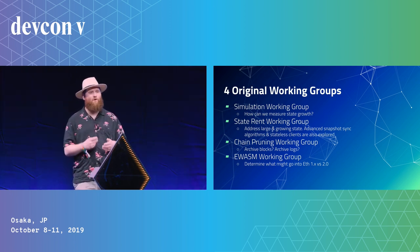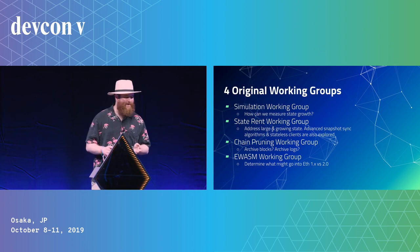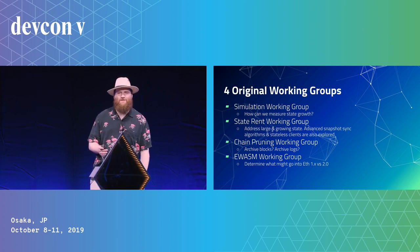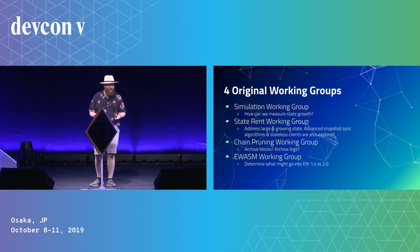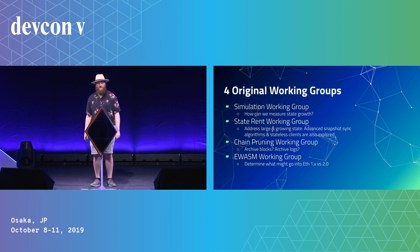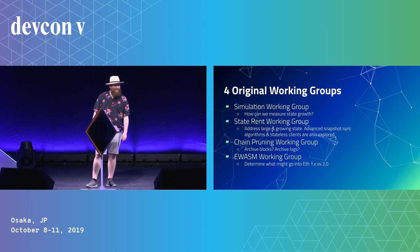The state rent working group, which has now turned into the state fee working group and evolved further, is about addressing the growing state — maybe advanced snapshot syncing and stateless clients are also explored. ETH 2.0 is going to have a lot of changes, and figuring out how to store information in a way where it's not going to blow up people's hard drives is important. People are just storing this data for free, and you can't even run an Ethereum client on a regular hard disk drive anymore — it has to be on a solid state drive because of the disk I/O.